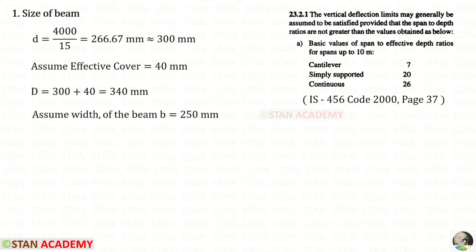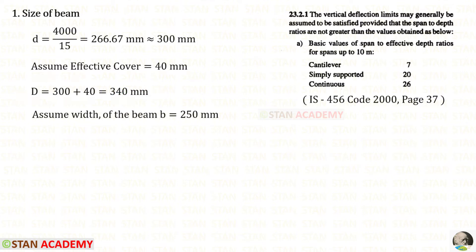Let us assume the effective cover is 40 millimeter. So the overall depth D will be 300 plus 40, giving 340 millimeter. And let us assume the width of the beam B as 250 millimeter.